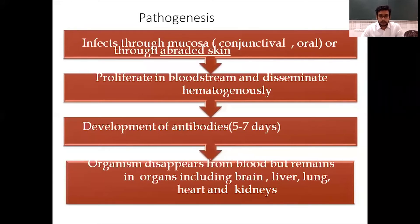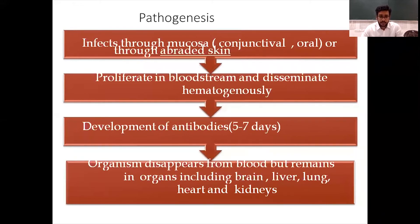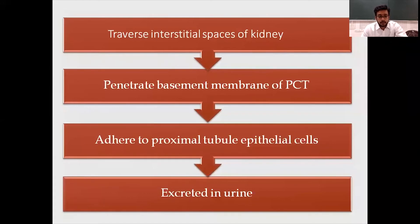Leptospirosis is under-reported and underdiagnosed. Lack of awareness is the main cause, along with lack of appropriate laboratory diagnostic facilities in most rural parts of the country. Coming to pathogenesis: the organism infects through mucosa — conjunctival, oral — or through abraded skin, where it proliferates in the bloodstream, disseminates hematogenously, and the host develops antibodies within the first five to seven days. The organism then disappears from blood but remains in organs including brain, liver, lung, heart, and kidneys.